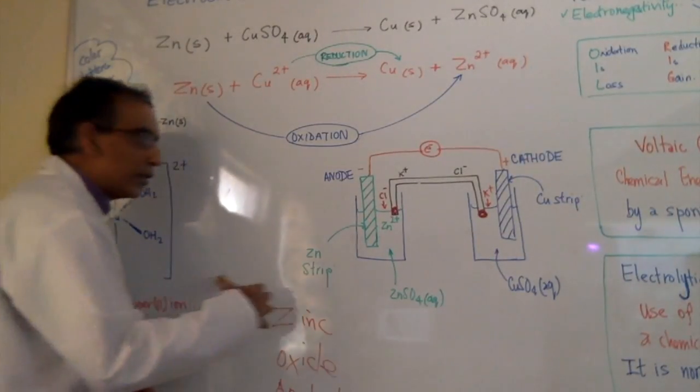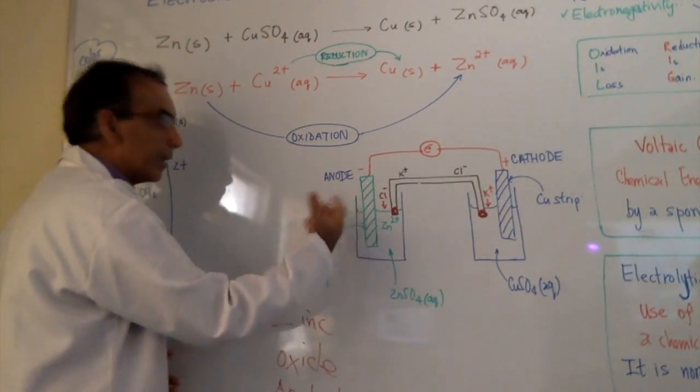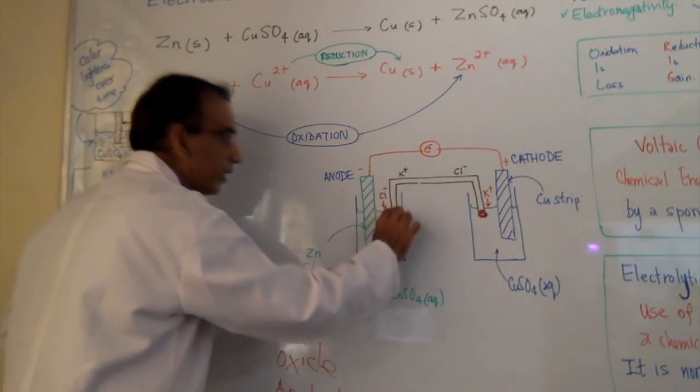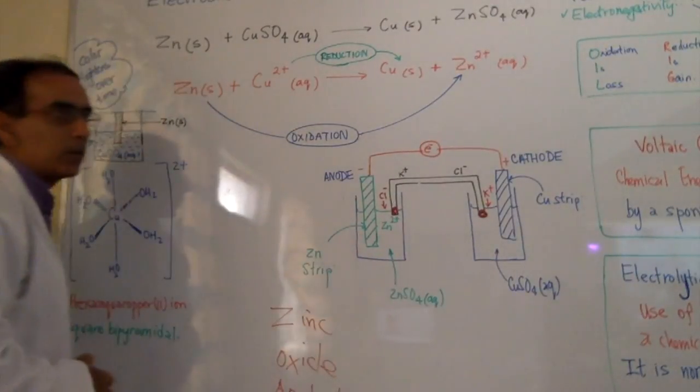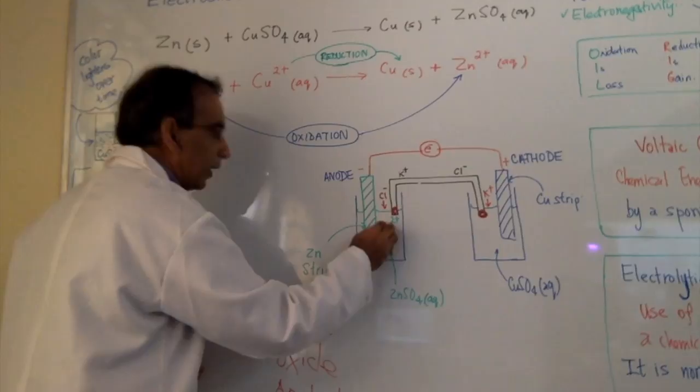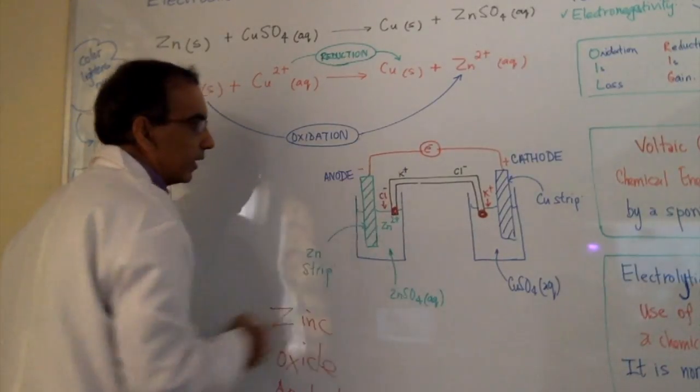So to continue to allow that zinc to be liberated and deformed, you need to have something to add into there. And by putting this salt bridge, in this case it's potassium chloride, chloride ions are going to come in here and balance things off to allow zinc to continue to give electrons.